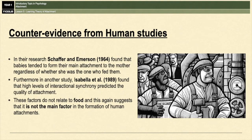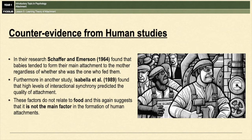Another bit of counter evidence comes from human studies. In Schaffer and Emerson's 1964 research, babies tended to form their main attachments to the mother regardless of whether she was the one who fed them. Isabella found that high levels of interactional synchrony predicted how good an attachment would be to the primary caregiver — again nothing to do with food. Both studies suggest that food isn't the main factor in forming human attachments; rather, things like responsiveness to the needs of the baby are more important.